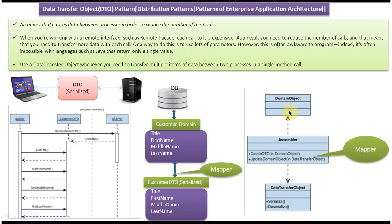The mapper's job is to convert domain object to DTO and DTO to domain object. DTO is an object that carries data between processes to reduce the number of method calls. For example, if the client wants to store customer information in the database, it formulates a customer DTO and sends it to the server. The server gets the DTO and using the mapper converts it to the customer domain object, then saves it in the customer table.